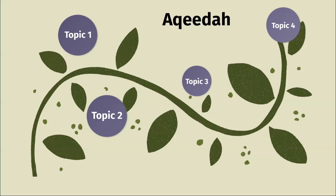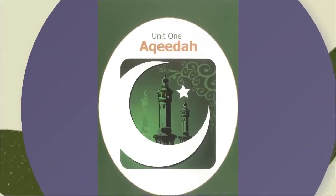Akida, or Majira as students call it, is an Arabic term for belief or creed. It represents the core principles and fundamental beliefs that shape our understanding of Islam. It's the foundation upon which our relationship with Allah and our understanding of his creation stand.